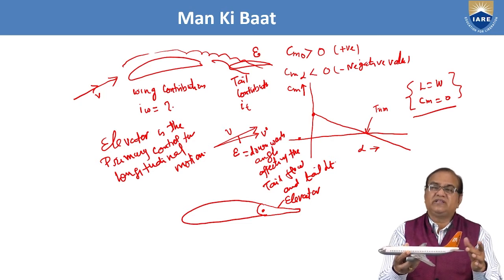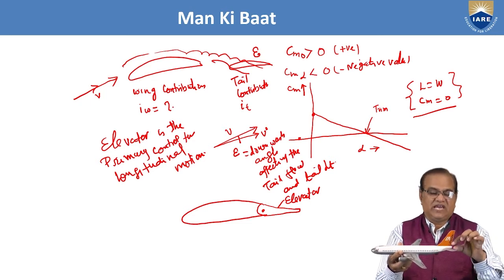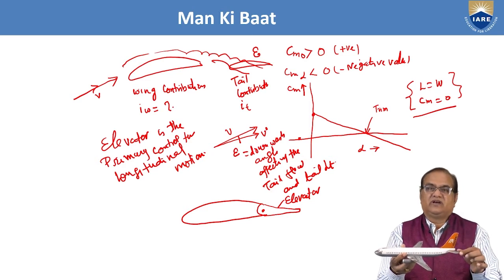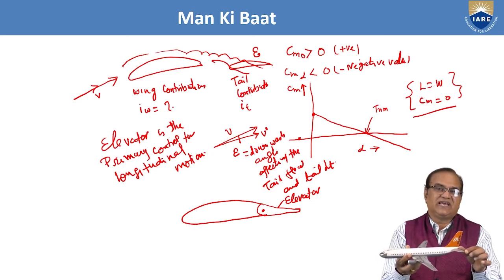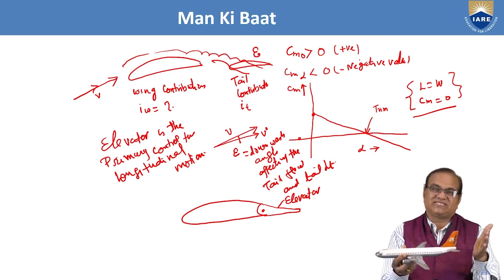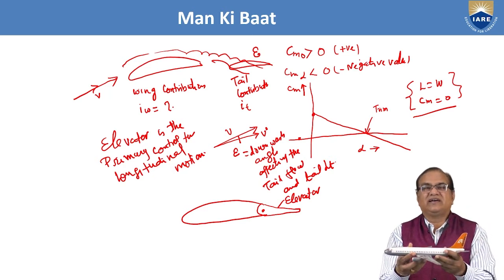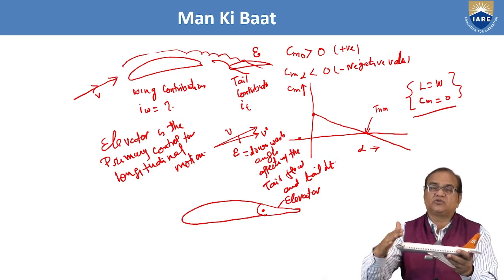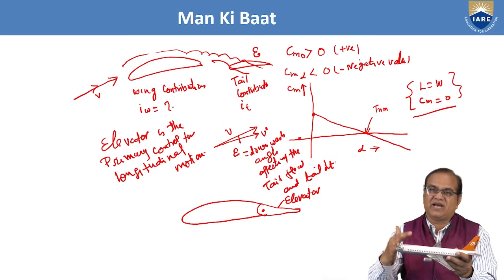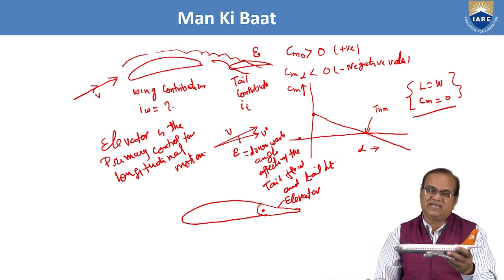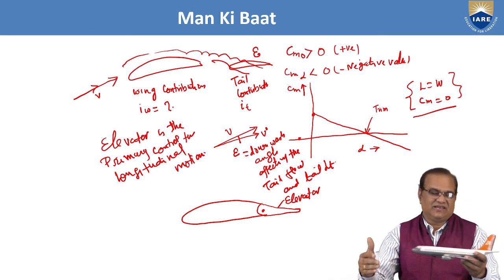That is why we place the horizontal tail as far behind the center of gravity as possible — so that the size of the tail can be reduced and the weight of the aircraft is tremendously reduced. In today's lecture I am going to talk about the effect of elevator deflection, called delta_E.